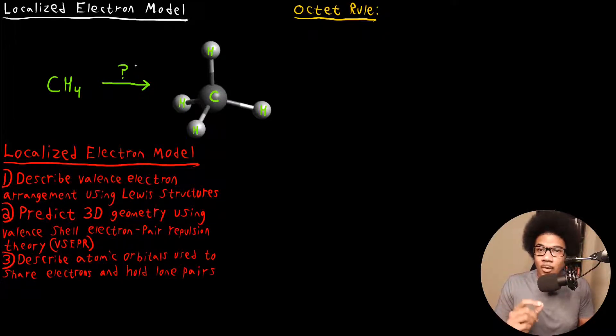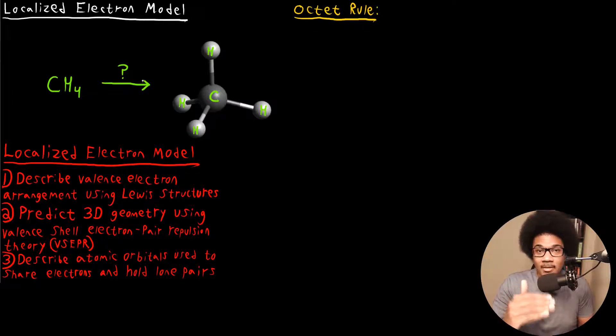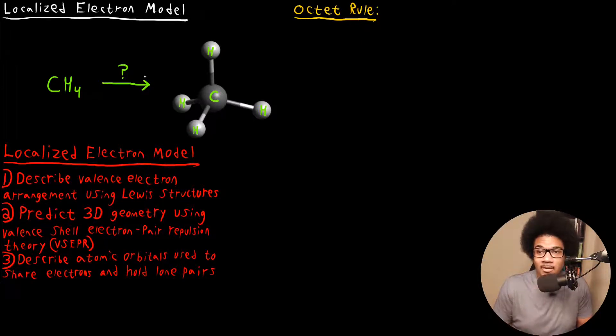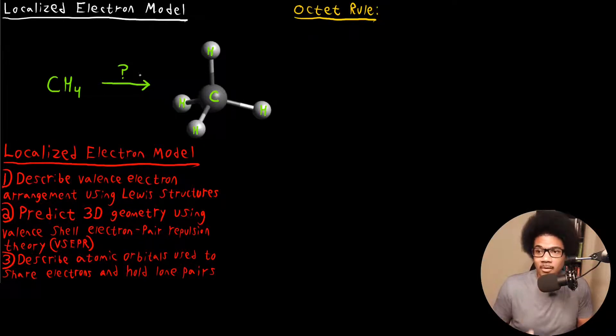The localized electron model is what bridges that gap, and this is what we're going to be talking about in really the first three units of this course — the different pieces of the localized electron model.